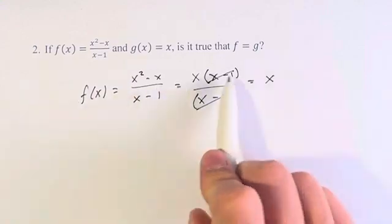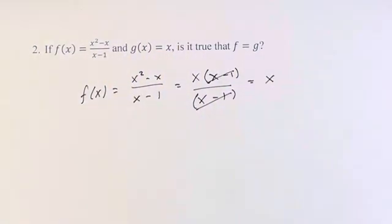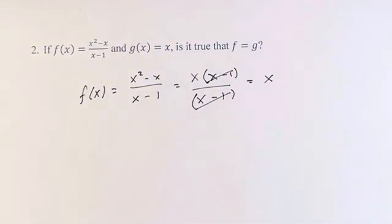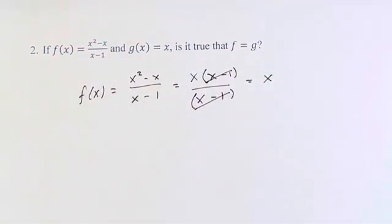So it looks like f(x) is equal to x and g(x) is equal to x. However, you have to consider what we actually did when we canceled this out.